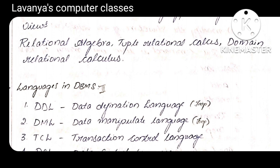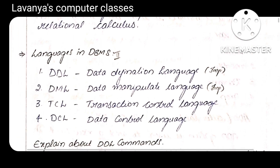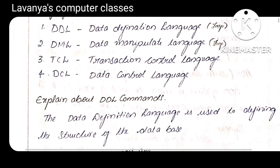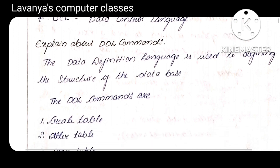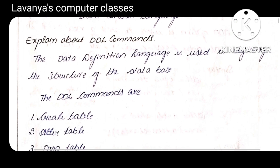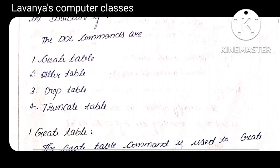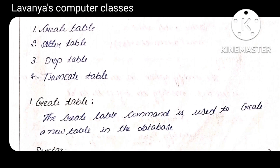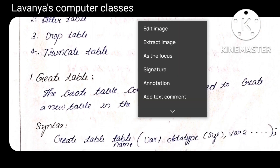What are the different types of languages? Those are DDL, DML, TCL, DCL — Data Definition Language, Data Manipulation Language, Transaction Control Language, and Data Control Language. First we explain what is DDL. The DDL commands are four different types: CREATE TABLE, ALTER TABLE, DROP TABLE, TRUNCATE TABLE.